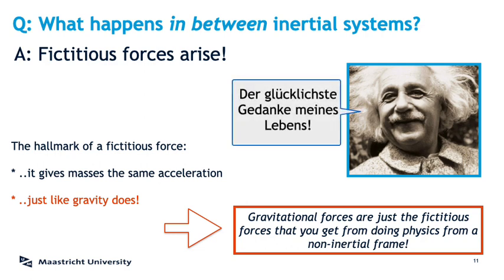In brief, it states that when you go in between inertial systems, nature gives you back gravity. So you can see gravity as the price that you have to pay for trying to do physics in a non-inertial frame.